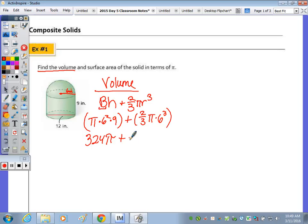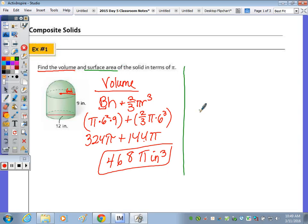But thirty-six times nine, the volume for the cylinder should be three hundred and twenty-four pi, plus two-thirds, six cubed is two-sixteen, so then two-thirds of that is one-forty-four. In terms of pi, we've got four hundred and sixty-eight pi cubic inches.